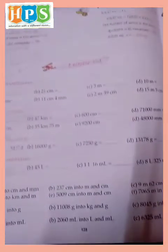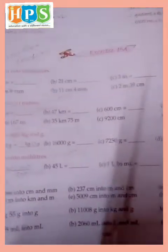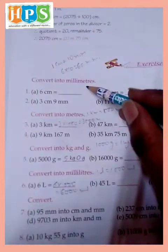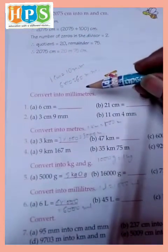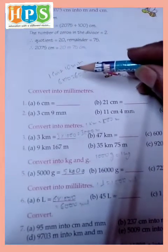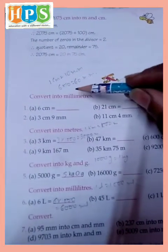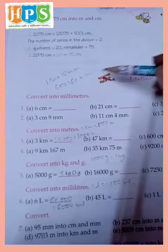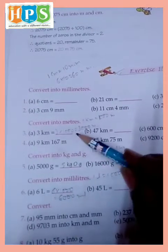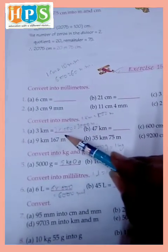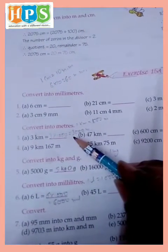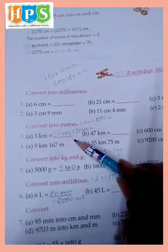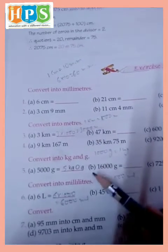Page number 128, exercise 15A. Convert into millimeter: 6 centimeter to convert millimeter. 1 centimeter is equal to 10 millimeter, so 6 multiplied by 10 is equal to 60 millimeter. Convert into meter: 3 kilometer. 1 kilometer is equal to 1000 meter, so 3 into 1000 is equal to 3000 meter.